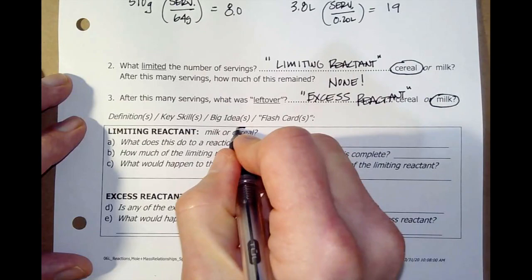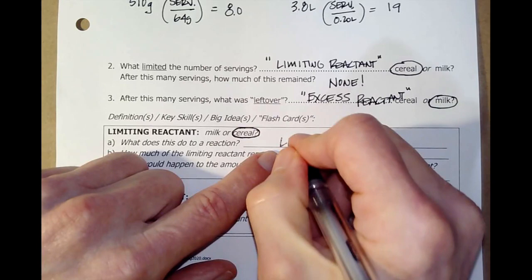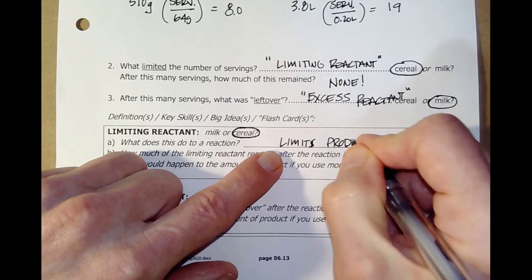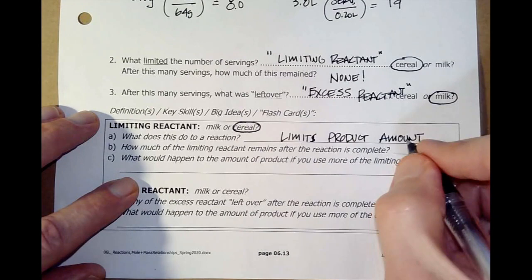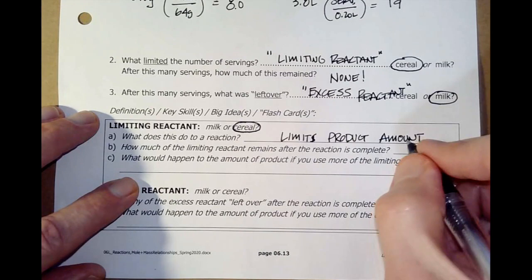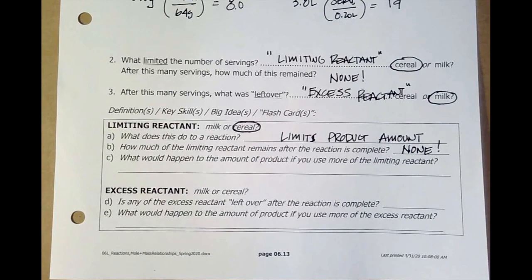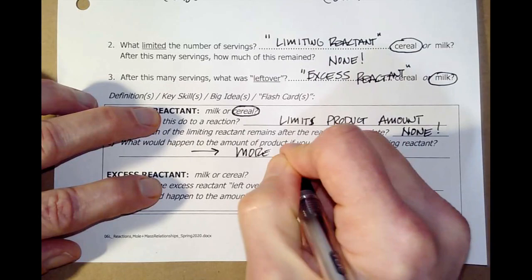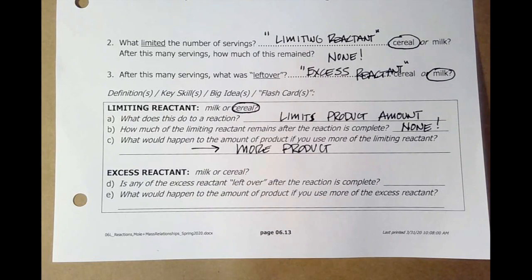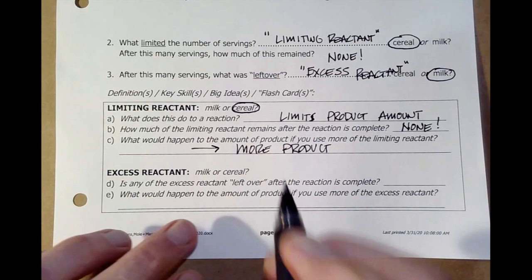Okay. Well, let's summarize that now. The limiting reactant here was cereal. And what it really did was it limited the production. So limits product amount. I could only get eight servings. No matter what I did, I got eight servings and that was it. And it was because I had run out of the cereal. What happens to the limiting reactant? How much is left after it's complete? None. That's the whole point. The limiting reactant runs out and everything just stops. Now, here's something to think about then. What if I had more cereal? If I had that, I could actually get more product. So there's my limiting reactant. You run out, it limits your amount of stuff you can produce. If I can get more, I can make more product.